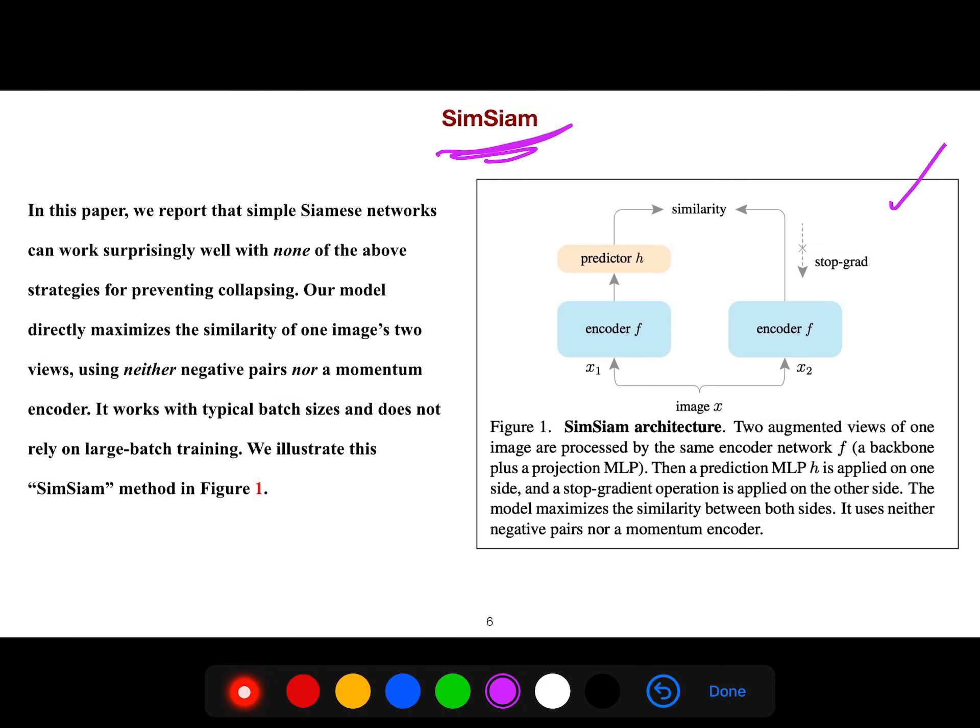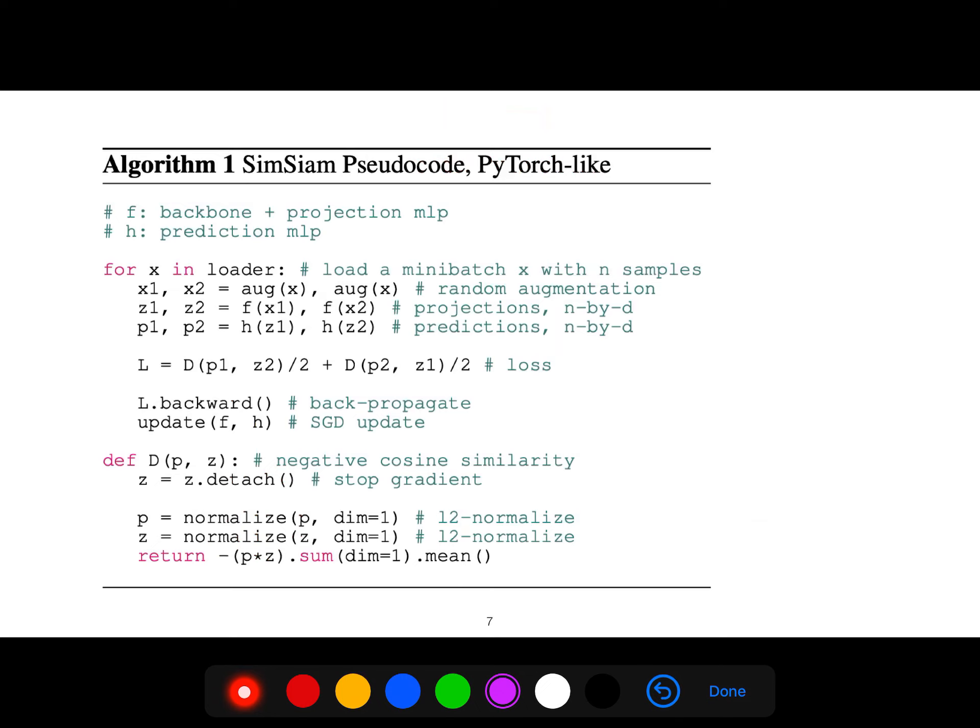It works with typical batch sizes and does not rely on large batch training. First we load the mini-batch X with N samples, and then we do augmentation, so we have two views. Then we do projection, which is N by D, and another projection H.